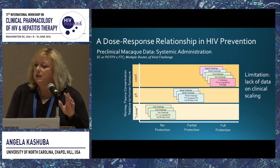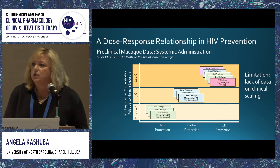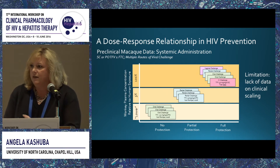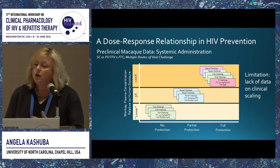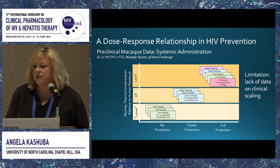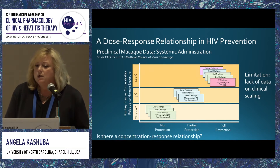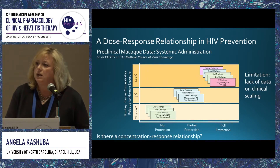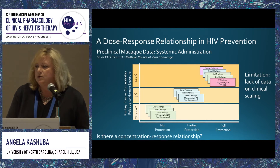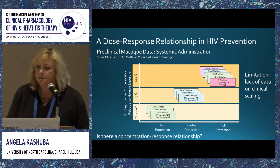We didn't really have data on clinical scaling of that. We couldn't necessarily use plasma concentrations because those very high concentrations were just untenable. So we wanted to understand whether there's a concentration-response relationship, particularly in the mucosa, that could help guide dosing strategies and interspecies scaling.